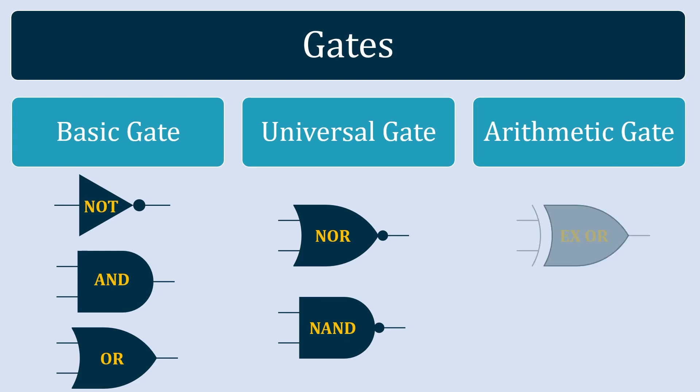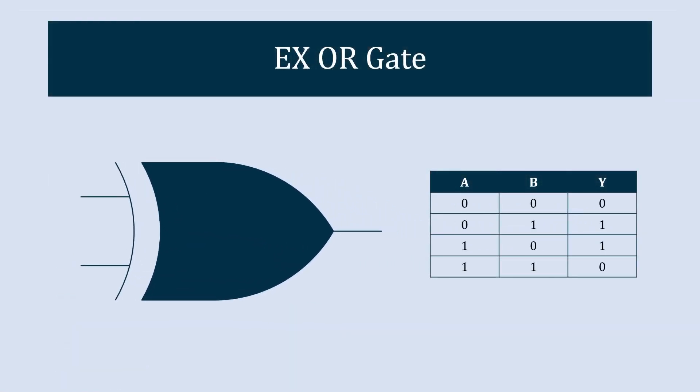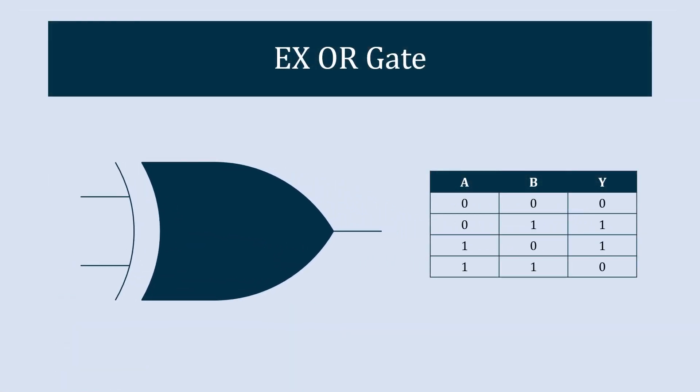The first gate in this category is the XOR gate. The symbolic representation of the XOR gate is a curved shape with an additional curved line at the left side where inputs are provided. This is the truth table of the XOR gate.